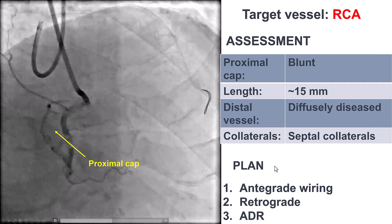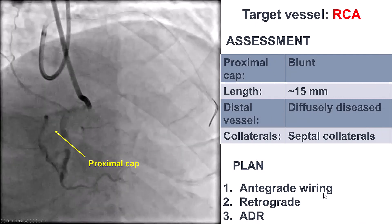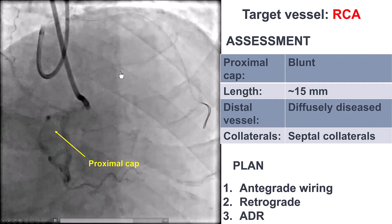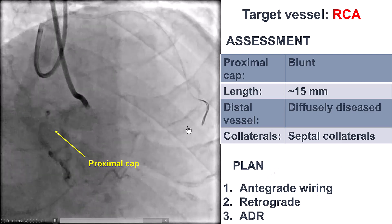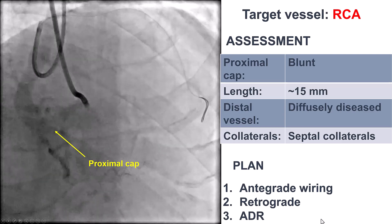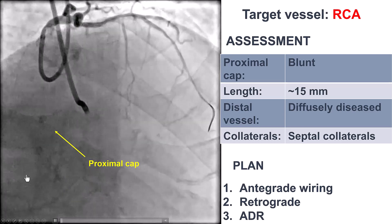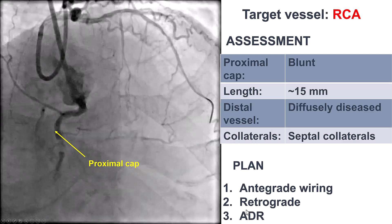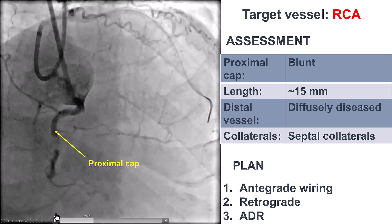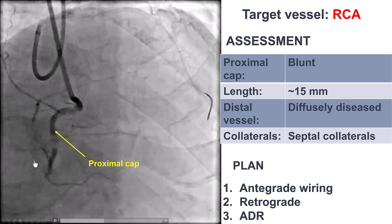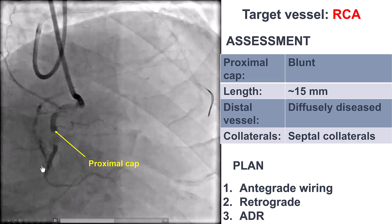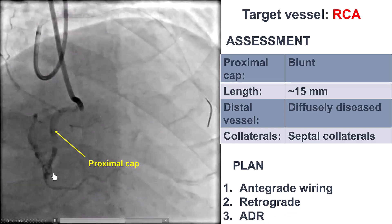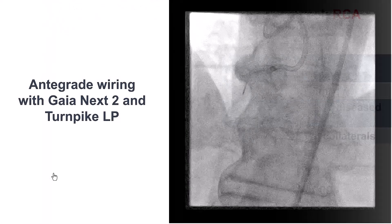Our plan was to first try antegrade wiring. If that didn't work, go retrograde through septal collaterals. And if that didn't work, go ADR. ADR was the least favorable because of the severe calcification that could hinder reentry.